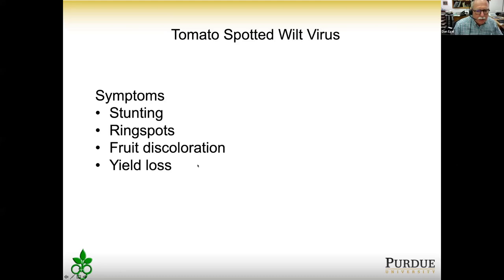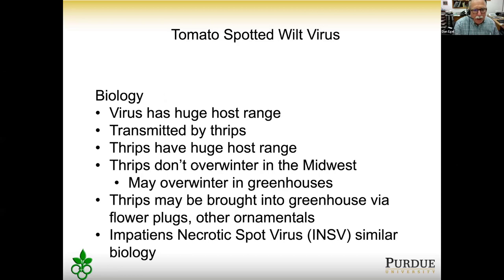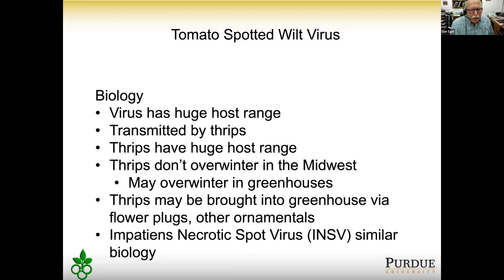Tomato spotted wilt virus causes ring spots, fruit discoloration, yield loss, and quality loss. The virus has a huge host range, which is important for its survival and transmission. It is transmitted by the insect thrips, which also have a huge host range, meaning the virus can get around in many different ways. Thrips fortunately don't overwinter in the Midwest.